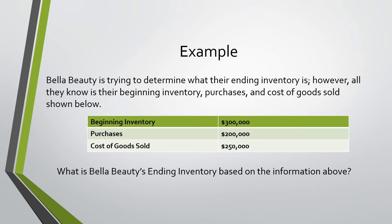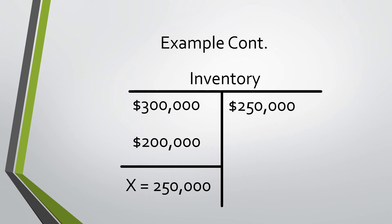What is Bella Beauty's ending inventory based on the information above? I chose to solve using a T-account, so I put in the $300,000 for beginning inventory, the $200,000 for purchases, and then subtracted the $250,000 for cost of goods sold. That then gave me an ending inventory of $250,000.